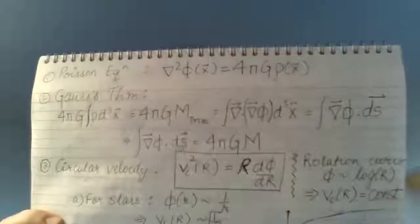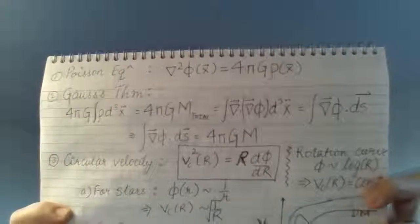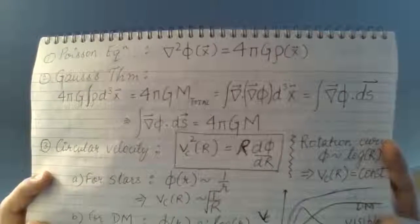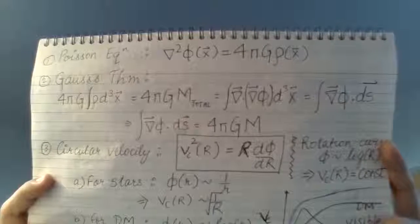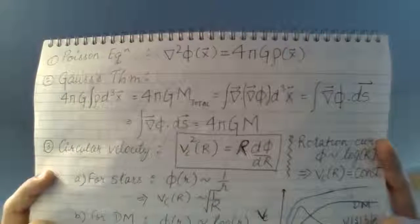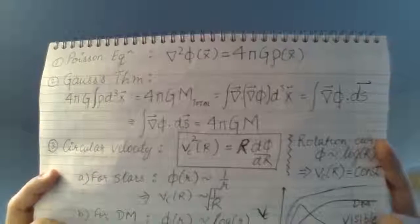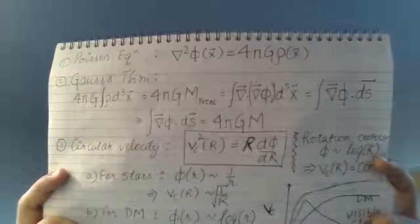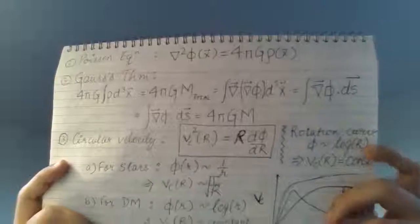But today let's move on. Today I want to revise certain formulas we already know, like the Poisson equation and Gauss's theorem, which you should have studied in your graduate program. We'll also talk a lot about circular velocity, which is very important — it's a stepping stone in galactic dynamics and is also used in the morphological study of galaxies. At the end we'll solve a numerical related to potential energy, a simple one.